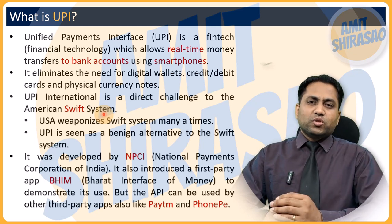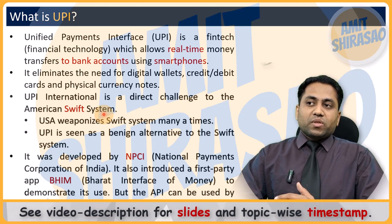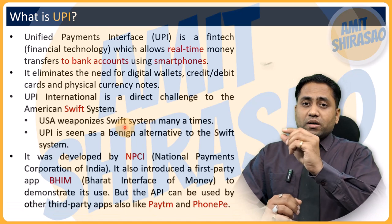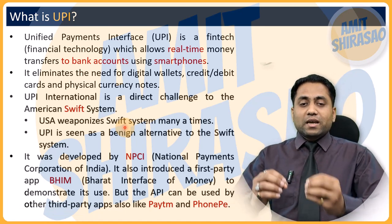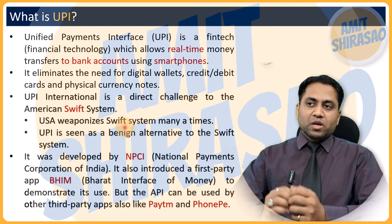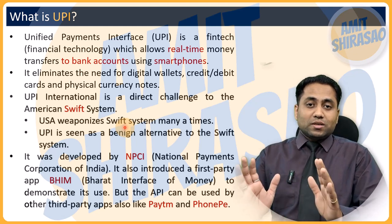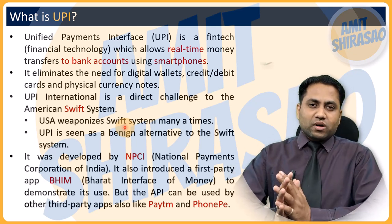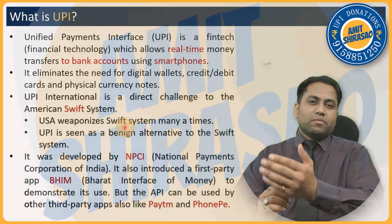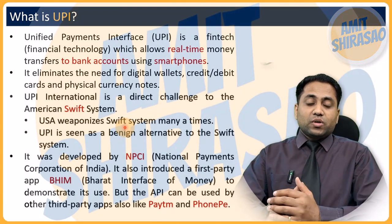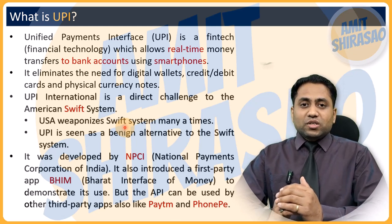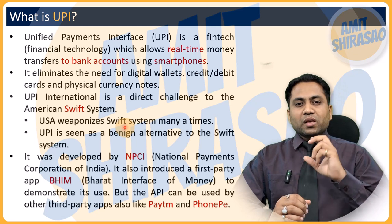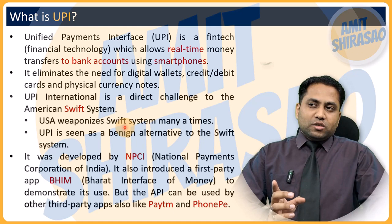SWIFT is the most widely used system of international money transfer, and even India uses it. The US many times weaponizes the SWIFT system — like in the Ukraine-Russia war, the first thing America did was pull Russia out of SWIFT, so Russia could not sell oil to European countries or accept US dollars directly. Russia then said it has its own system of exchange, but many countries don't use it. Similarly, the US has levied a kind of embargo on Russia using SWIFT.